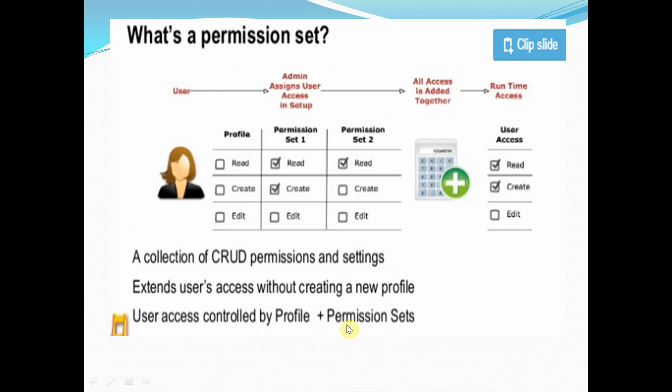Permission sets are similar to profiles but can be assigned to multiple users. They are used to extend a user's access without modifying their profile. For example, if you have assigned major profiles to all department users and different departments later need additional permissions, you would not go ahead and change existing profiles — since profiles control a lot of things — but instead create permission sets to extend access without conflicting with the existing profile.